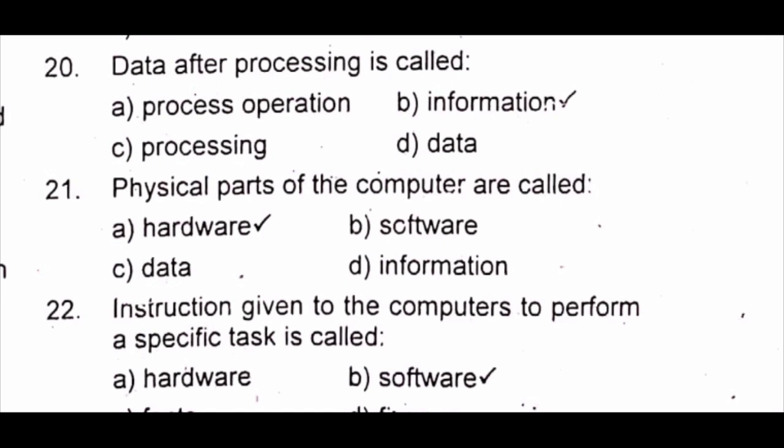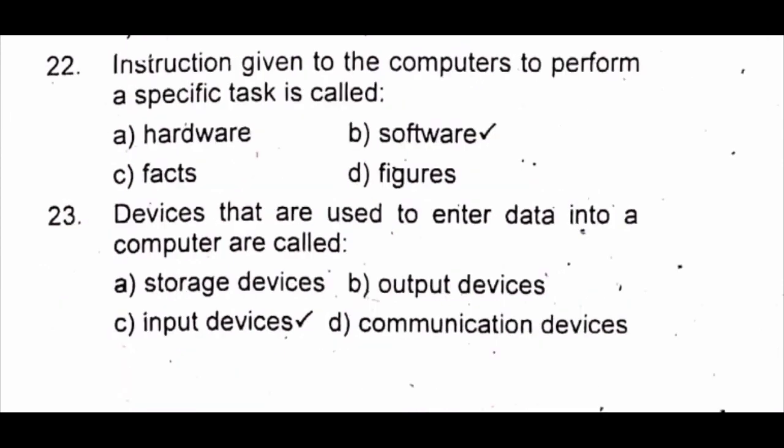Question 20: Data after processing is called A) process operation B) information C) processing the data. The answer is B) information. Question 21: Physical parts of the computer are called A) hardware B) software C) data D) information. The answer is A) hardware.